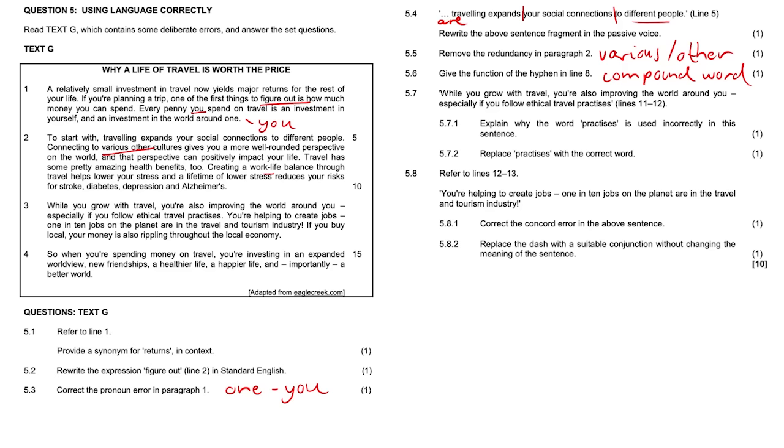5.7: While you grow with travel, you're also improving the world around you, especially if you follow ethical travel practices. So that's line 11 and 12. 5.7.1: Explain why the word 'practices' is used incorrectly in the sentence.